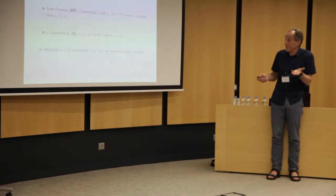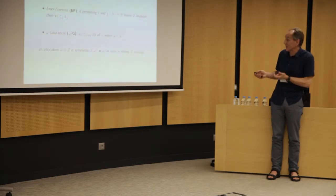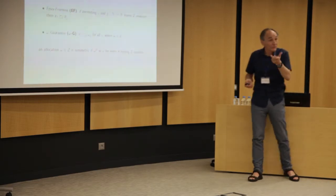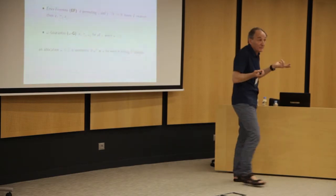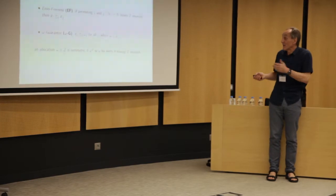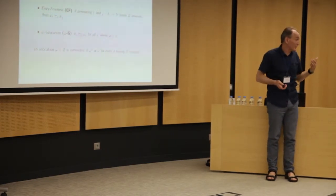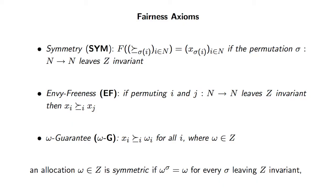Similarly, I can then define envy-freeness by saying that if the particular permutation of i and j leaves the set invariant, then i and j should not mutually envy each other. There should be no envy between i and j. And finally, a different kind of fairness condition which is more inspired by bargaining sort of context. I may have in mind a certain benchmark allocation, status quo, whatever. And I may want to guarantee that everybody is at least as well off as at this initial benchmark allocation.